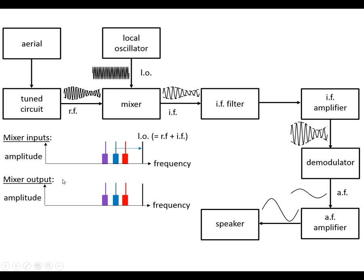What comes out of the mixer is we get the signals going in come out, but also we get a copy of each of these stations at the local oscillator frequency minus the signal. So we can see that this frequency difference gives us a copy of the red signal at this frequency, the blue at this frequency, and the red one at this frequency. So what we've got here is the local oscillator minus the radio frequency, which gives us the intermediate frequency.